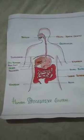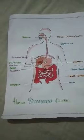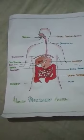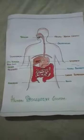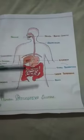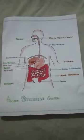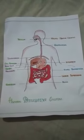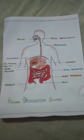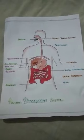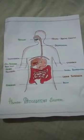The human alimentary canal runs from mouth to anus and it is about 9 meters long. It is also called the GUT.